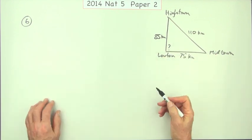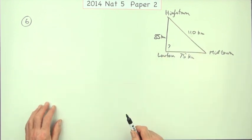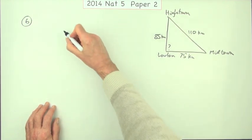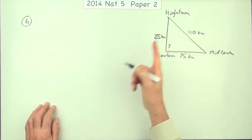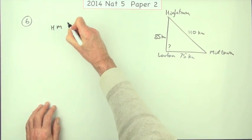Now another way would be just to use Pythagoras and ignore that 110 and see what that turns out to be. So just using Pythagoras, you would say, well, that distance, whatever you want to call it, maybe I'll just call it HM.